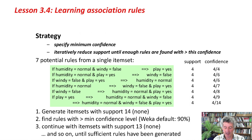For the weather data, a priori first of all generates item sets with support 14. There aren't any of those. If there were, it would find rules in them with greater than the minimum confidence level — the default for Weka is 90% confidence. Since there weren't any item sets with support 14, it would decrease the support to 13 and carry on decreasing it until it had found sufficient rules to satisfy the specified number of rules.